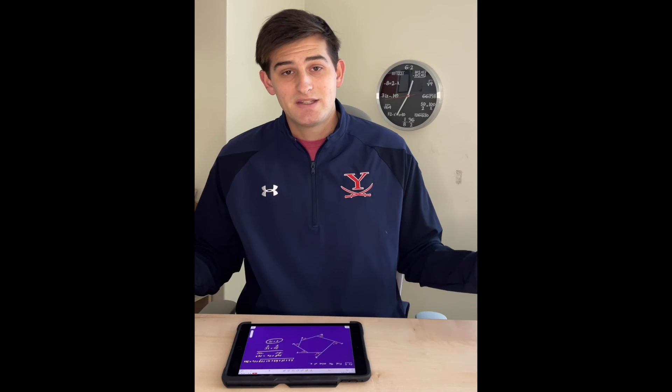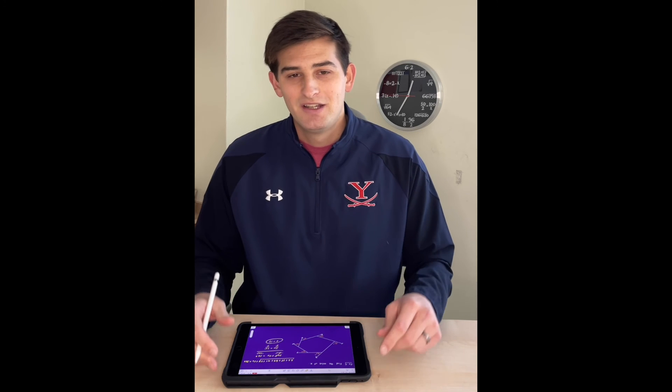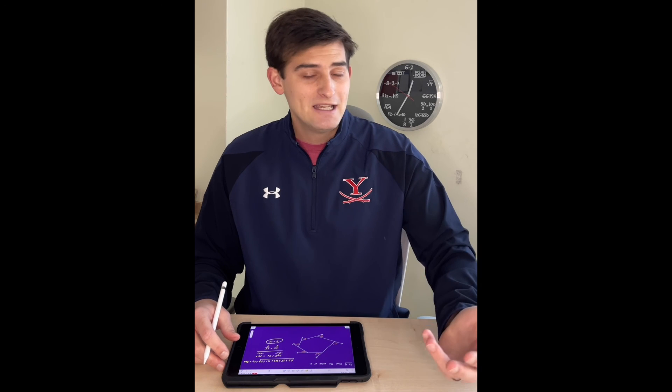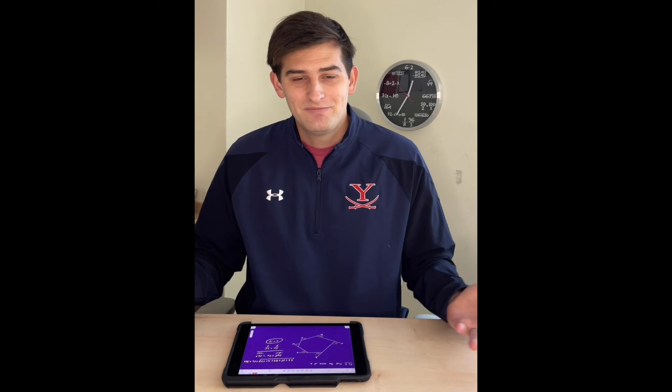Okay, that's pretty much it with exterior angles. A lot easier than interior. Remember, interior you take the number of sides of the polygon, subtract 2, multiply by 180. That's your sum. With exterior, they add up to 360.